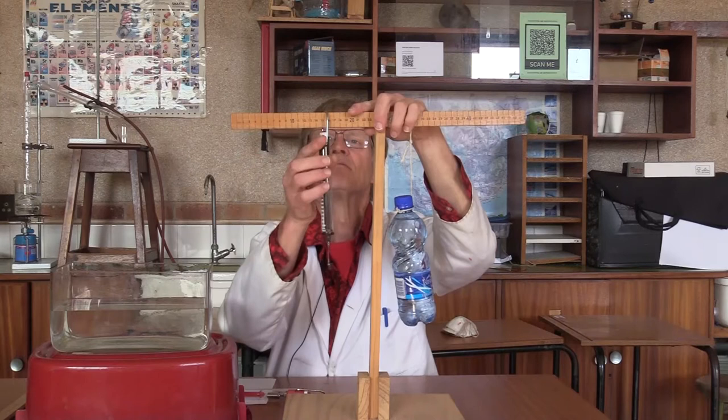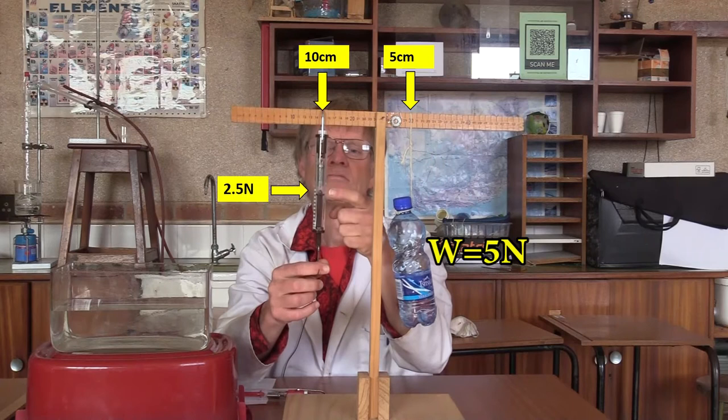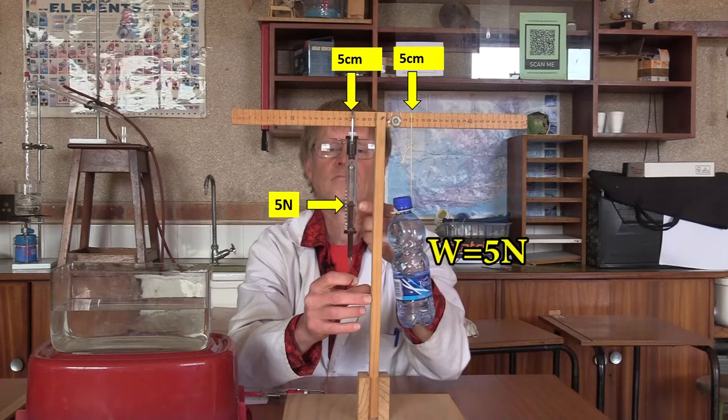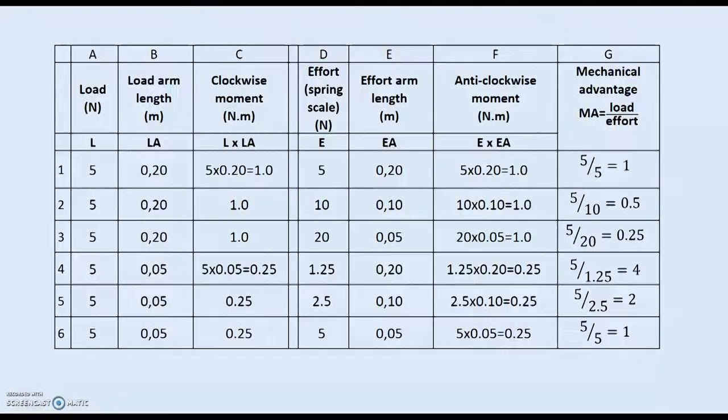Again, we move it closer to 10 centimeters. This time we find we only need 2.5 newtons. But when we bring it closest, so it's the same distance as the bottle from the fulcrum, we see it requires a force of 5 newtons, the same as the weight of the bottle.